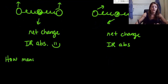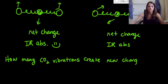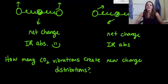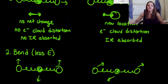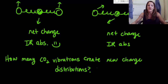How many carbon dioxide vibrations create new charge distributions? All you had to do was look back at the four drawings and see which ones had an electron cloud distortion. An electron cloud distortion just means you're going to have a new charge distribution — essentially, how many of these are going to actually absorb IR radiation? The answer was three.